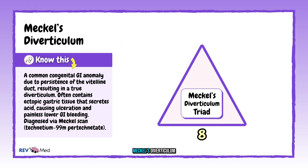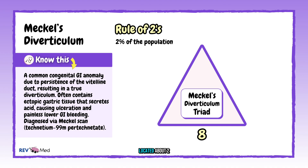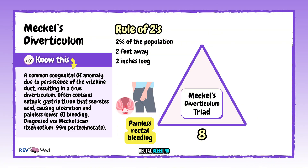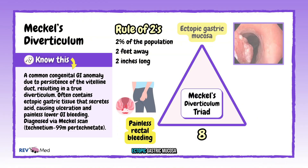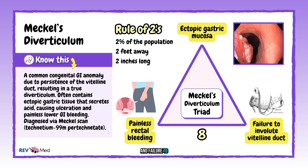Number eight: Meckel's diverticulum — the rule of twos. Occurs in two percent of the population, located about two feet from the ileocecal valve, and is two inches long. There is painless rectal bleeding, ectopic gastric mucosa, and failure to involute the vitelline duct. It often contains ectopic gastric tissue and can cause painless bleeding in kids.